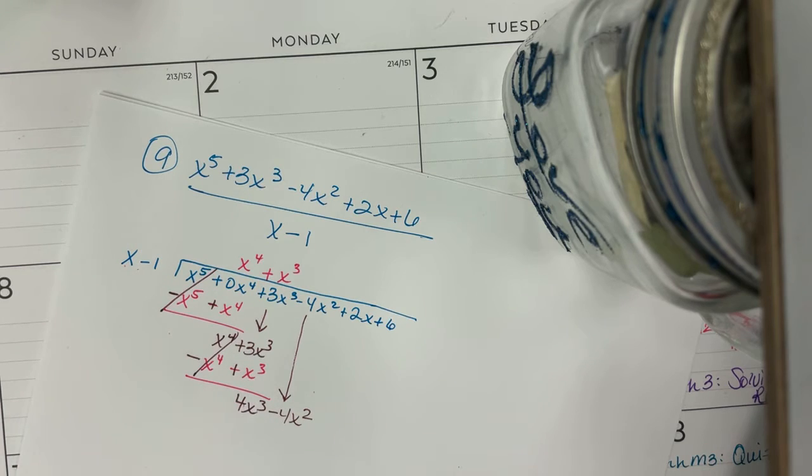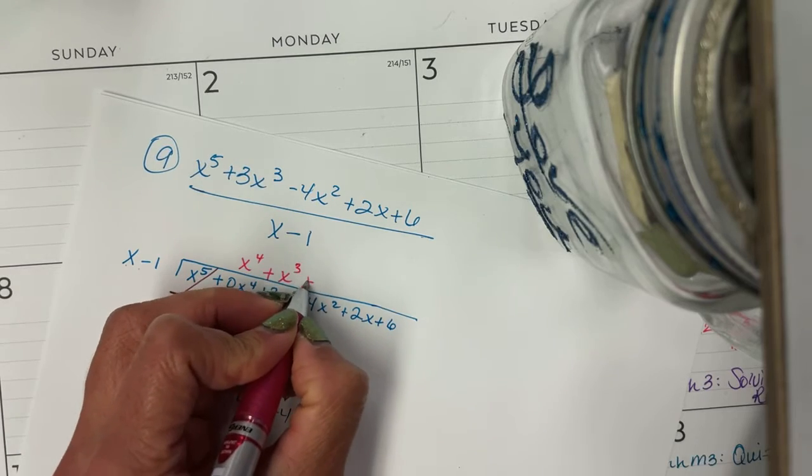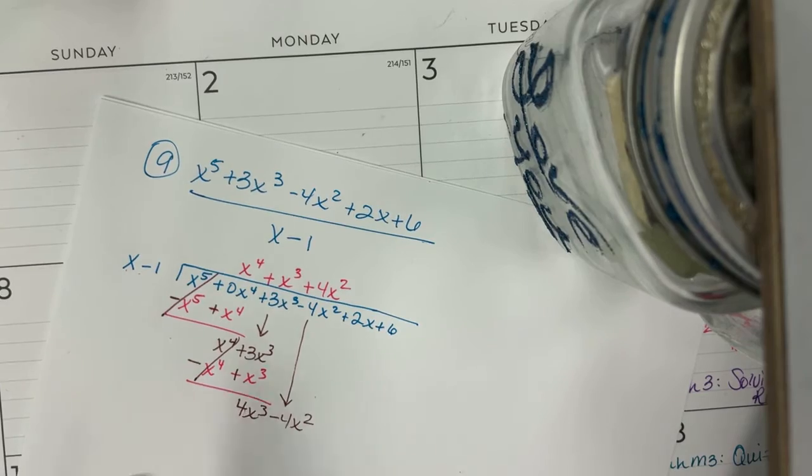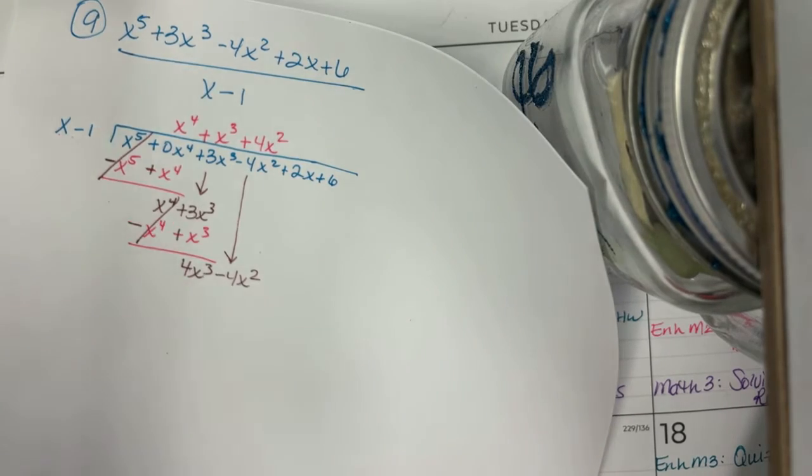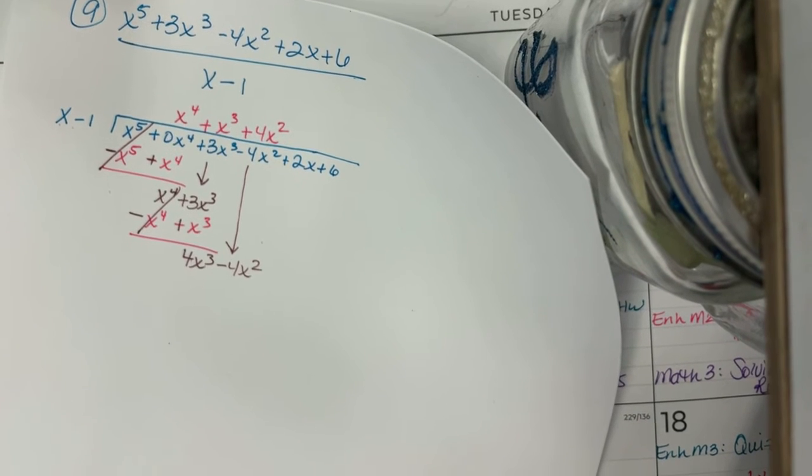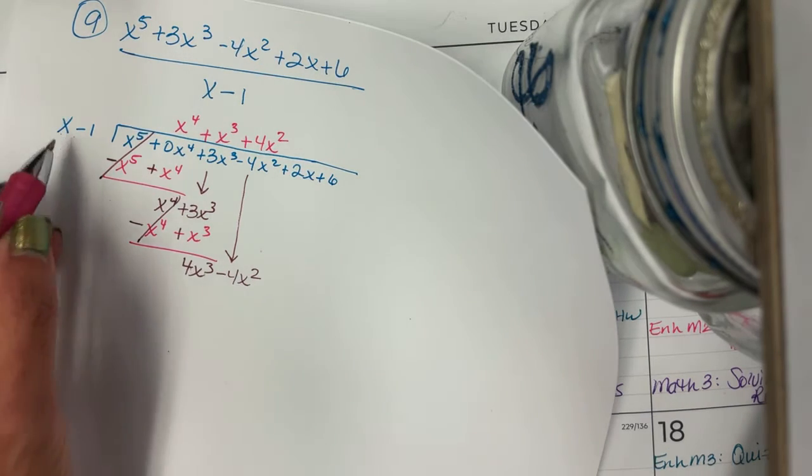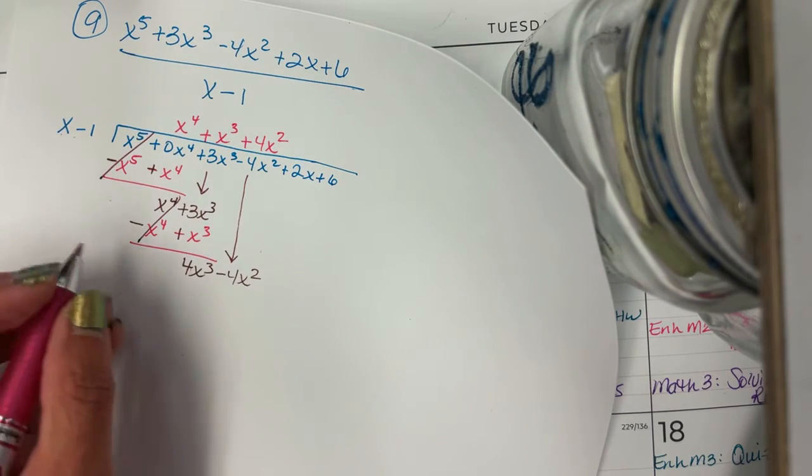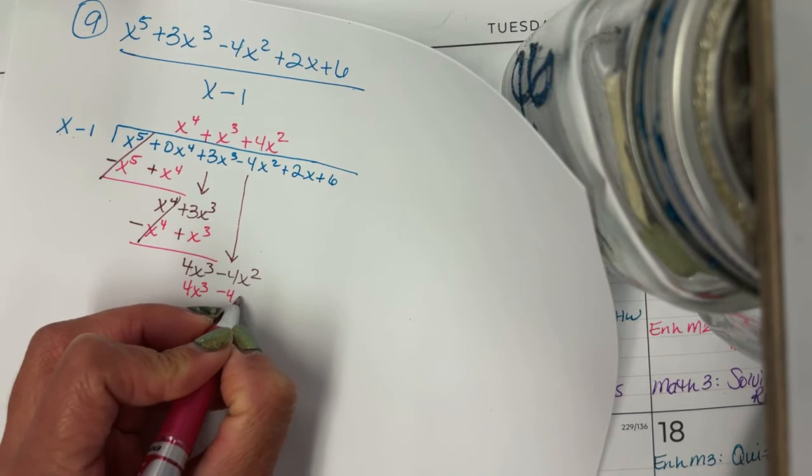Next one. This time we need to get 4x cubed. So what do I multiply by x to get 4x cubed? I need 4x squared. All right, so next we have to just do it again. Now I need to get 4x cubed. Let me see if I can focus on this a little bit better. There it goes. Now I need to get 4x cubed. So what do I multiply by x to get 4x cubed? Well, that was 4x squared, which I already got. Now distributing, 4x squared times x gives me 4x cubed. 4x squared times negative one is negative 4x squared.